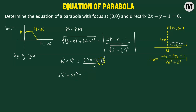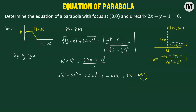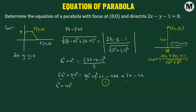Expanding (2h minus k minus 1) squared gives 4h squared plus k squared plus 1 minus 4hk plus 2k minus 4h. Transposing all terms to the left hand side: 5h squared minus 4h squared gives h squared; 5k squared minus k squared gives 4k squared; and the remaining terms give plus 4hk plus 4h minus 2k minus 1 equals 0.